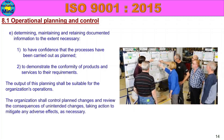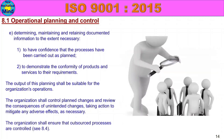The organization shall control planned changes and review the consequences of unintended changes, taking action to mitigate any adverse effects as necessary. In the case of any change, it is controlled and planned. The organization also needs to ensure that outsourced processes are controlled — for example, heat treatment, plating, or sub-assembly. The subcontractor for the outsourced process must be monitored and controlled by the company. These are the 8.1 operational planning and control requirements.